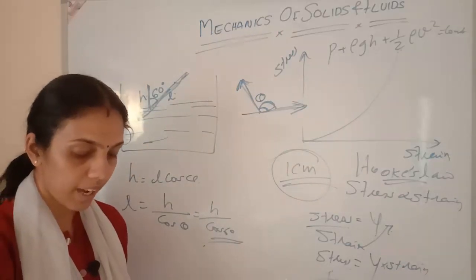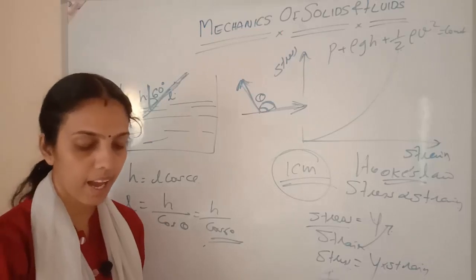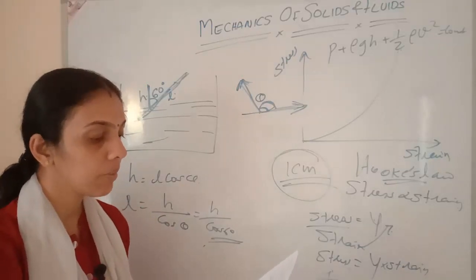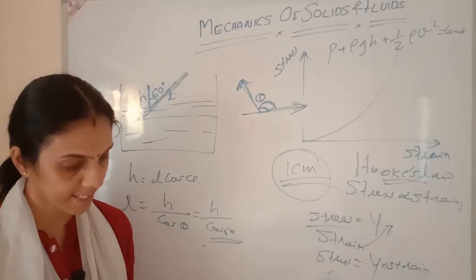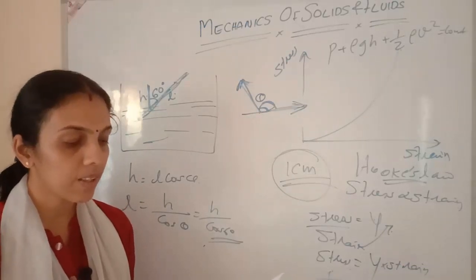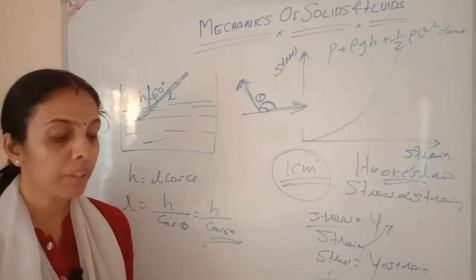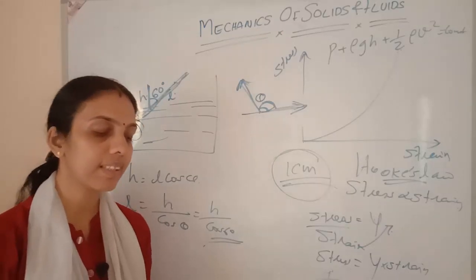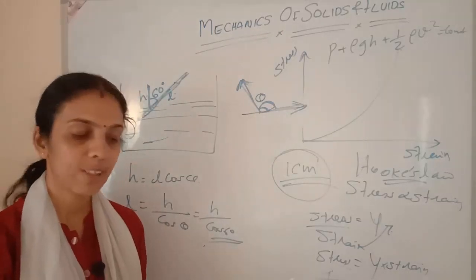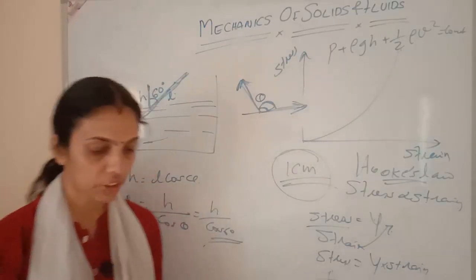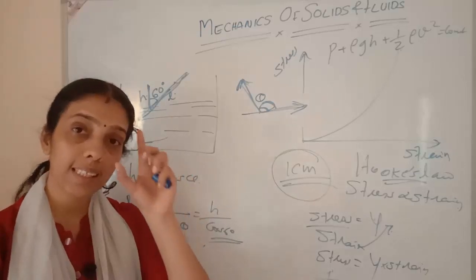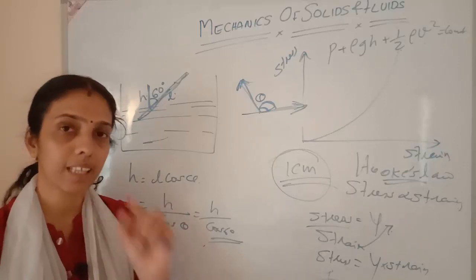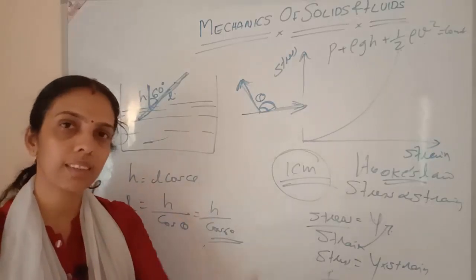Derive an expression for the rise of liquid in a capillary tube of radius R, density rho, and surface tension S — that is a derivation. Venturi meter is based on Bernoulli's theorem; hydraulic lift is based on Pascal's law. Viscous force exists when there is relative motion between layers of fluid. True or false: viscosity of gas decreases with increase in temperature. That is false — viscosity of gases increases with increase in temperature.